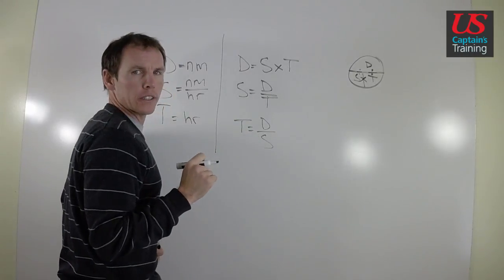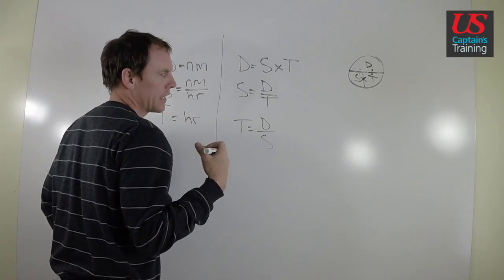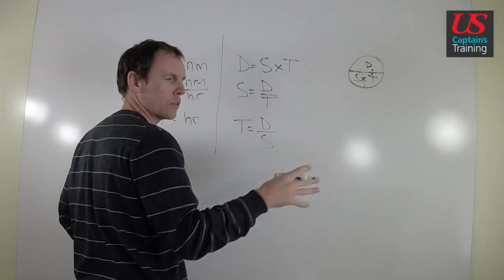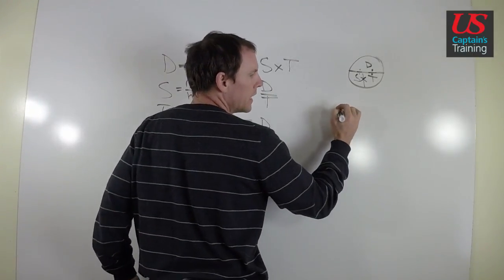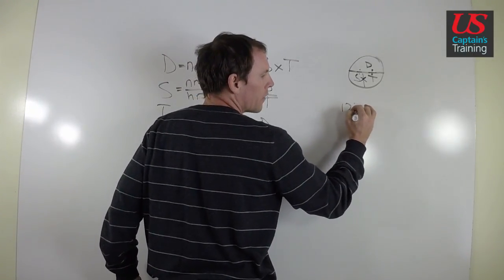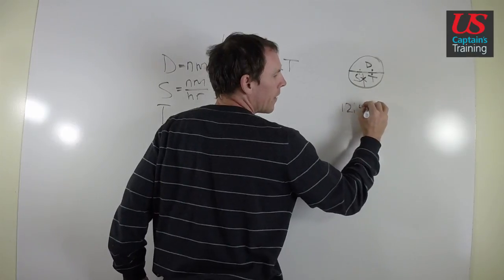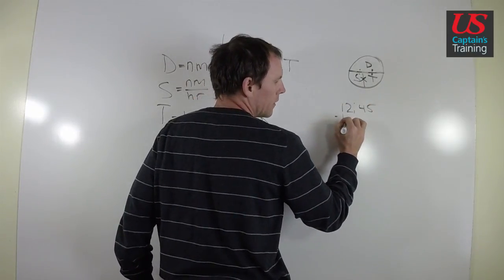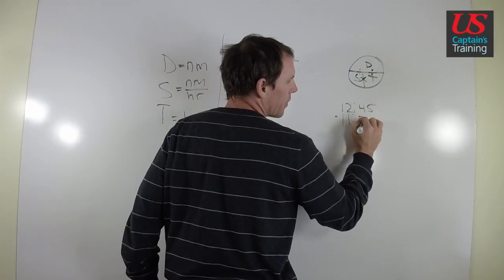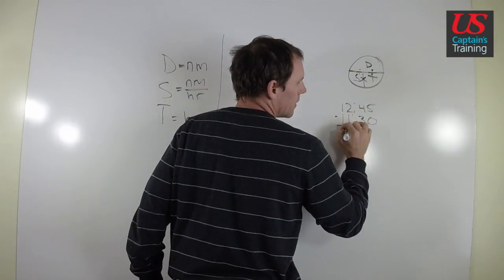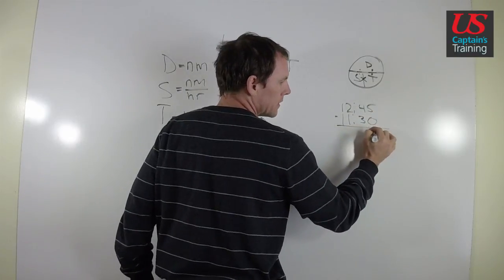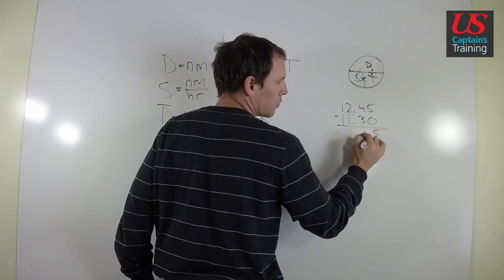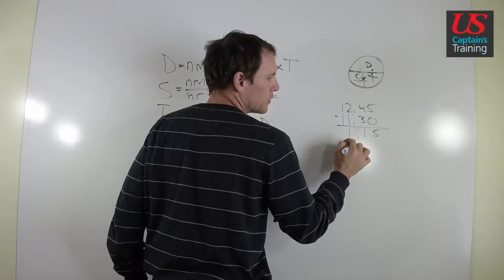So let's look at one example here. This would be an example for ETA or Speed Made Good where we have to convert some of these. If we take 12 hours and 45 minutes and we subtract 11 hours and 30 minutes, let's do the subtraction: 5 minus 0 is 5, 4 minus 3 is 1, 12 minus 11 is 1.